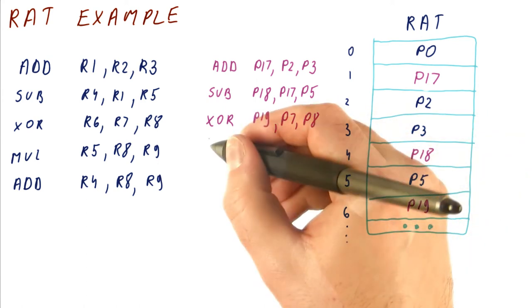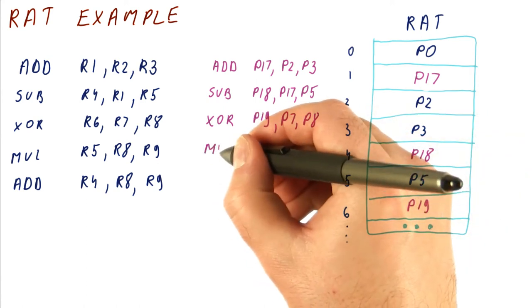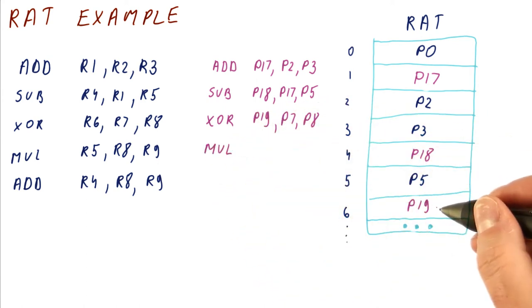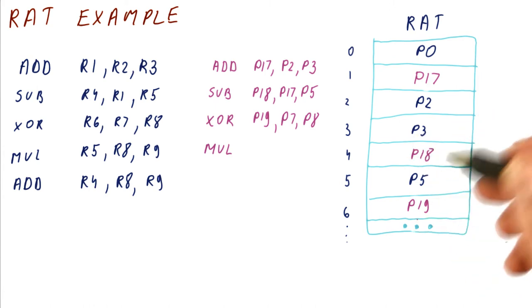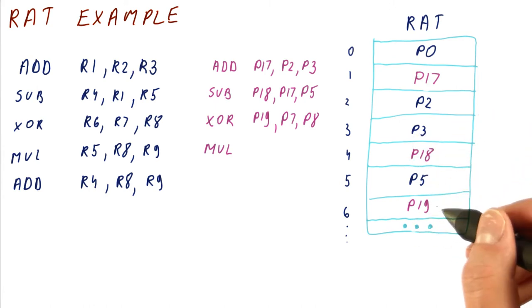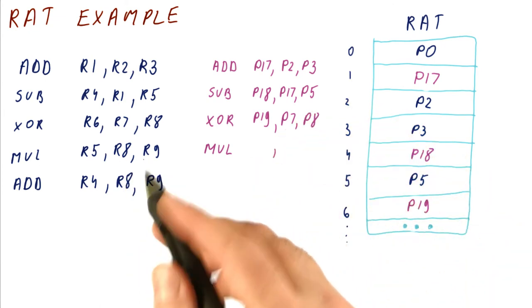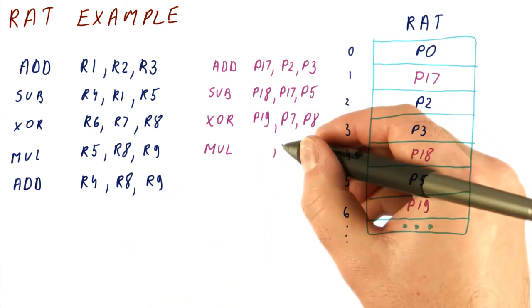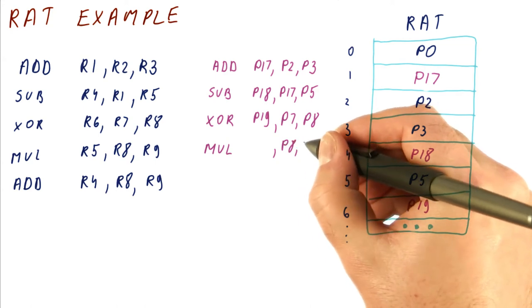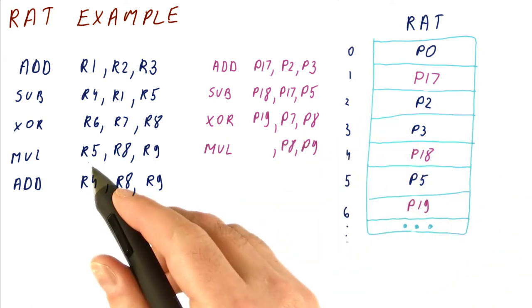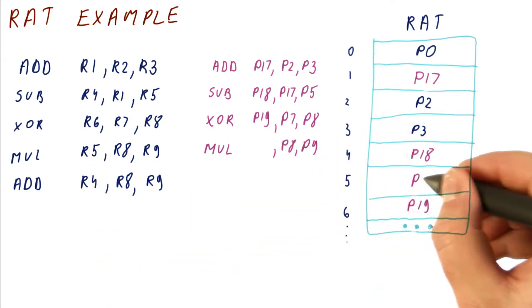Then we're going to take this multiply. And remember, you need to update the RAT every time you produce a new value, because that's where subsequent instructions will find the value for that register. So we're going to, again, R8 and R9, still not changed, so they're going to be P8 and P9. The new value for R5 is going to go to P20.